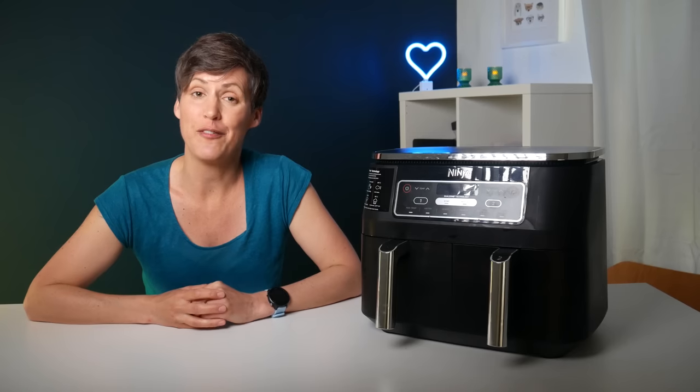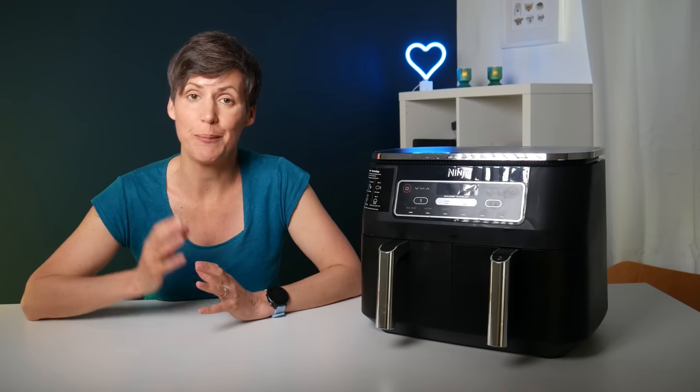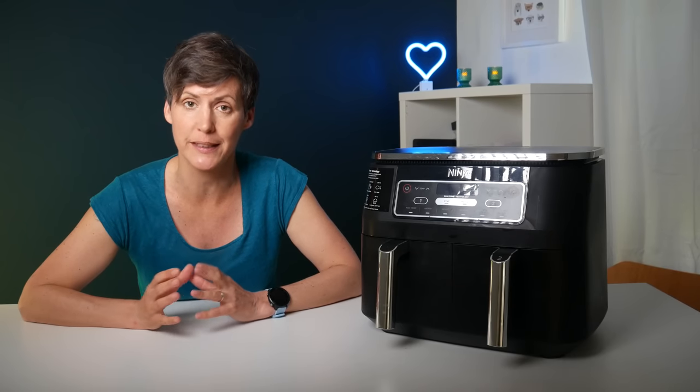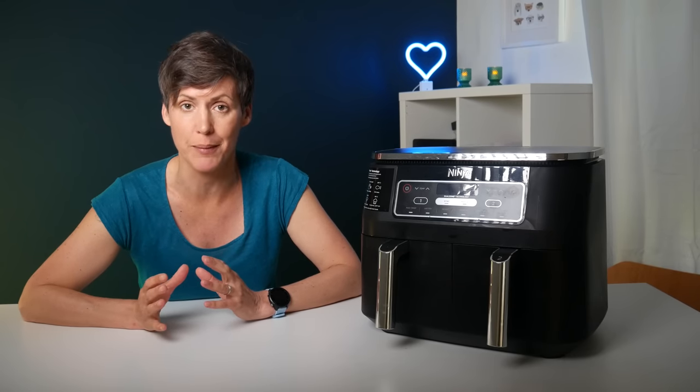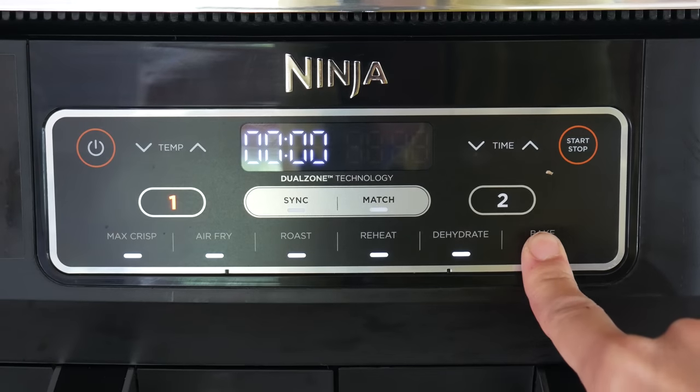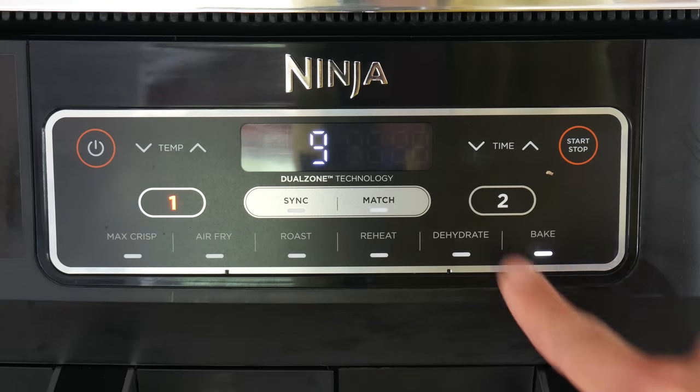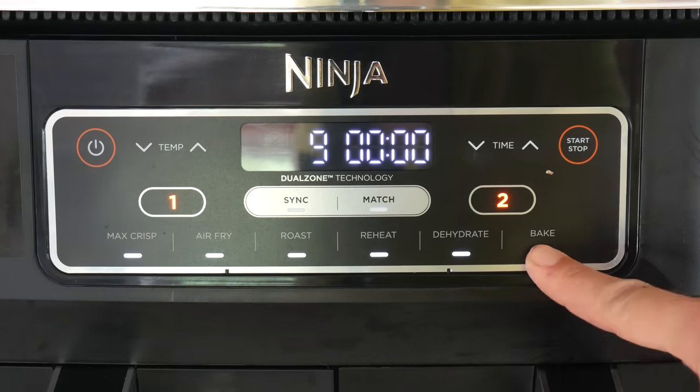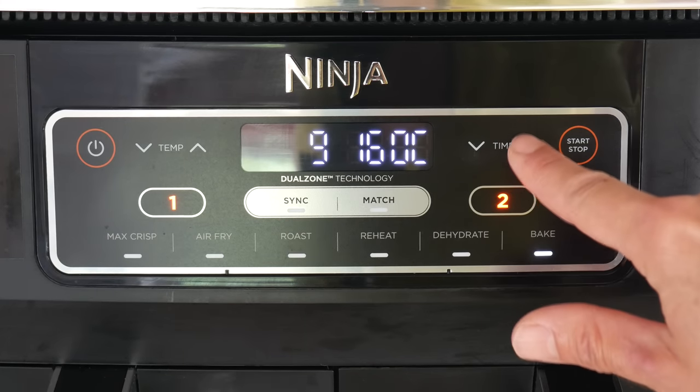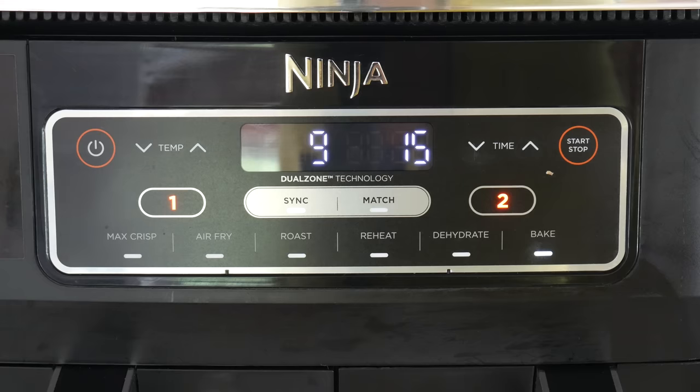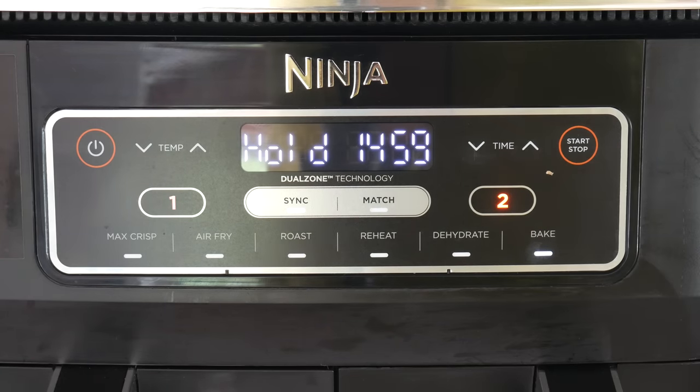One of the great functions with this machine which beats a conventional oven hands down is the fact that you can sync both drawers so that they finish at the same time. If you've got one thing which is going to take nine minutes to cook and another thing that's going to take 15 minutes to cook, you set them both up, press the sync button and it will hold off cooking the thing with the longer duration until it's ready to start so that they both finish at the same time.